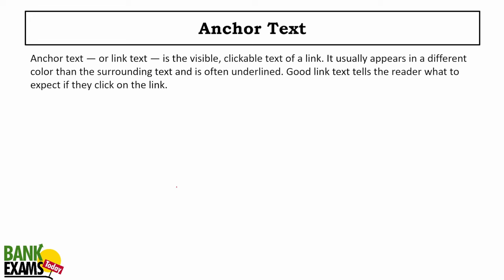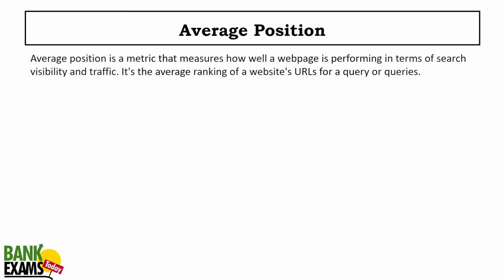Anchor text: when you go to a website and see 'click here' as a link — blue colored with an underline — 'click here' is the anchor text. A clickable text in a hyperlink is known as the anchor text.